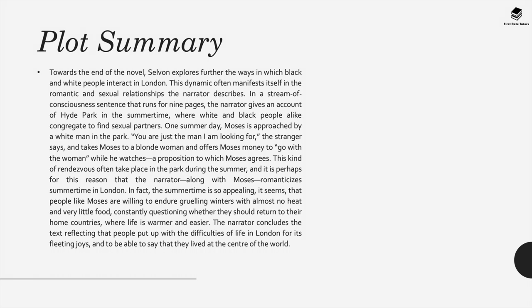Towards the end of the novel, Selvon explores further the ways in which black and white people interact in London. In a stream-of-consciousness sentence that runs for nine pages, the narrator gives an account of Hyde Park in the summertime, where white and black people alike congregate to find sexual partners. One summer day, Moses is approached by a white man in the park who takes him to a blonde woman and offers Moses money to go with the woman while he watches — a proposition to which Moses agrees. The summertime is so appealing that people like Moses are willing to endure gruelling winters with almost no heat and little food, constantly questioning whether they should return to their home countries. The narrator concludes by reflecting that people put up with the difficulties of life in London for its fleeting joys, and to be able to say that they lived at the centre of the world.